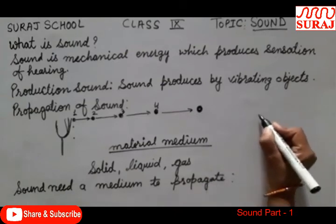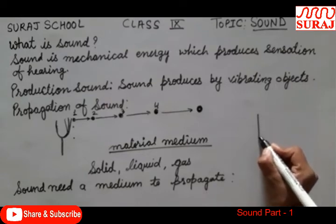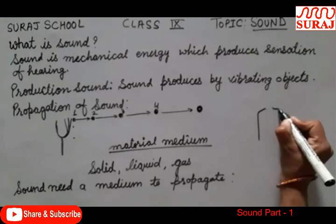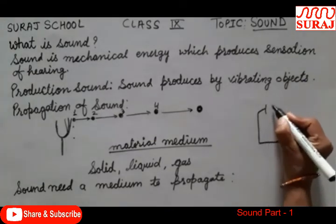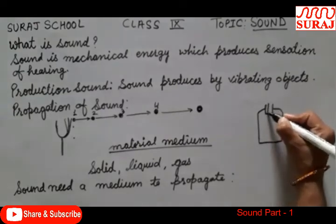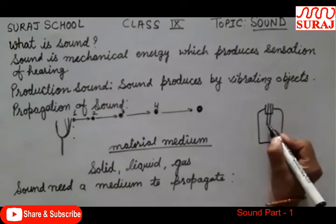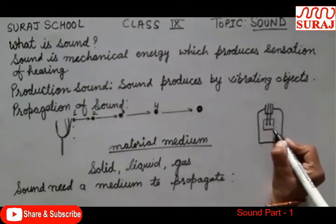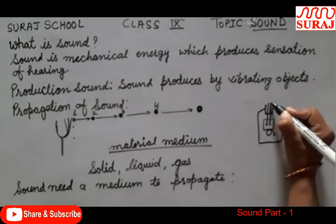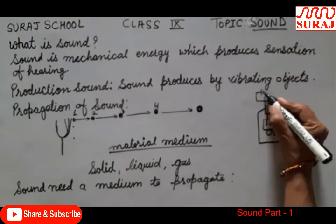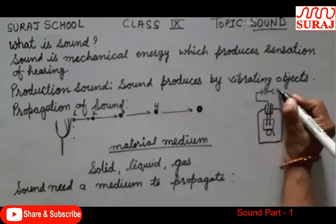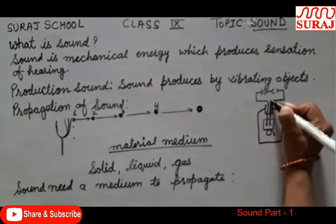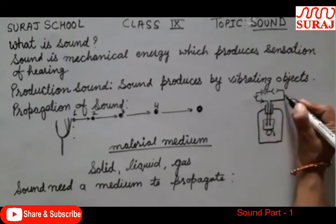Iske experiment ke liye, hum ek bell jar lenge. Take a bell jar. Bell jar mein hum setup is tarah se karenge — uske beech mein hum ek electric bell set karenge. And joh wire hai, usko connect karenge battery se, then connect karenge key se. Aur is tarah se hum setup karenge.